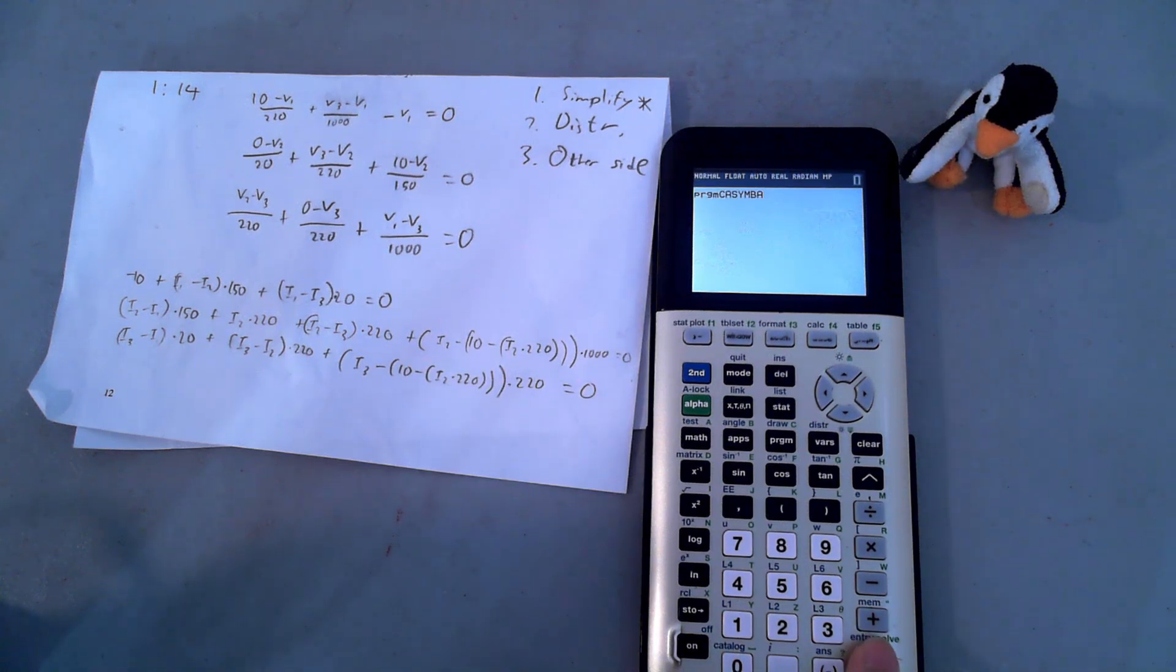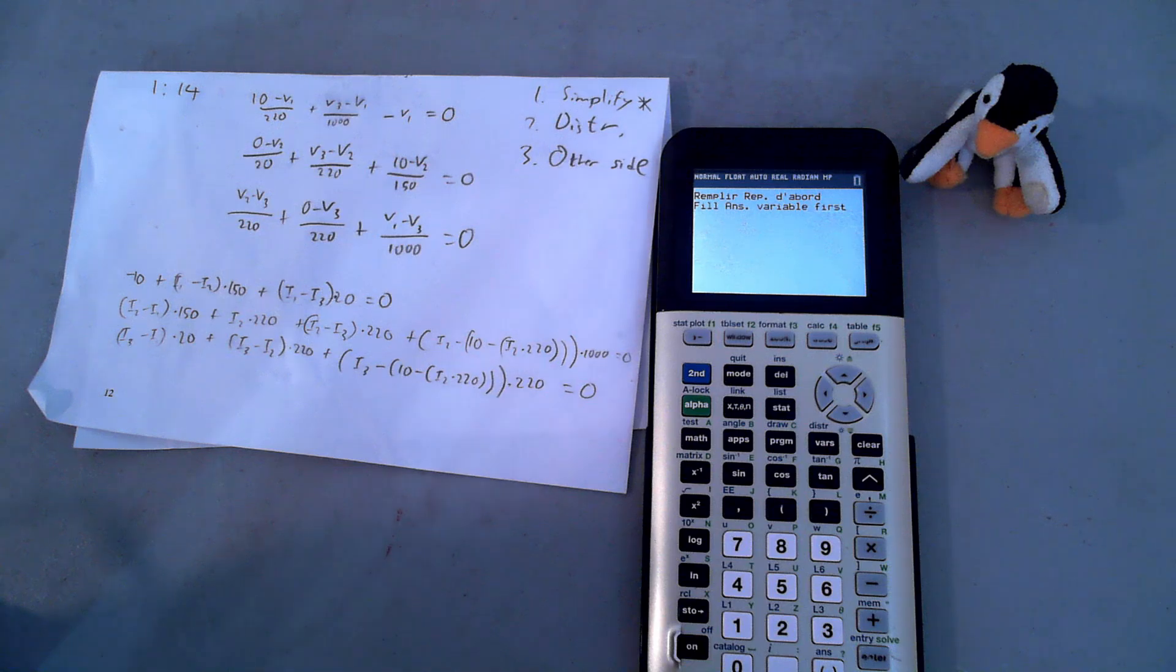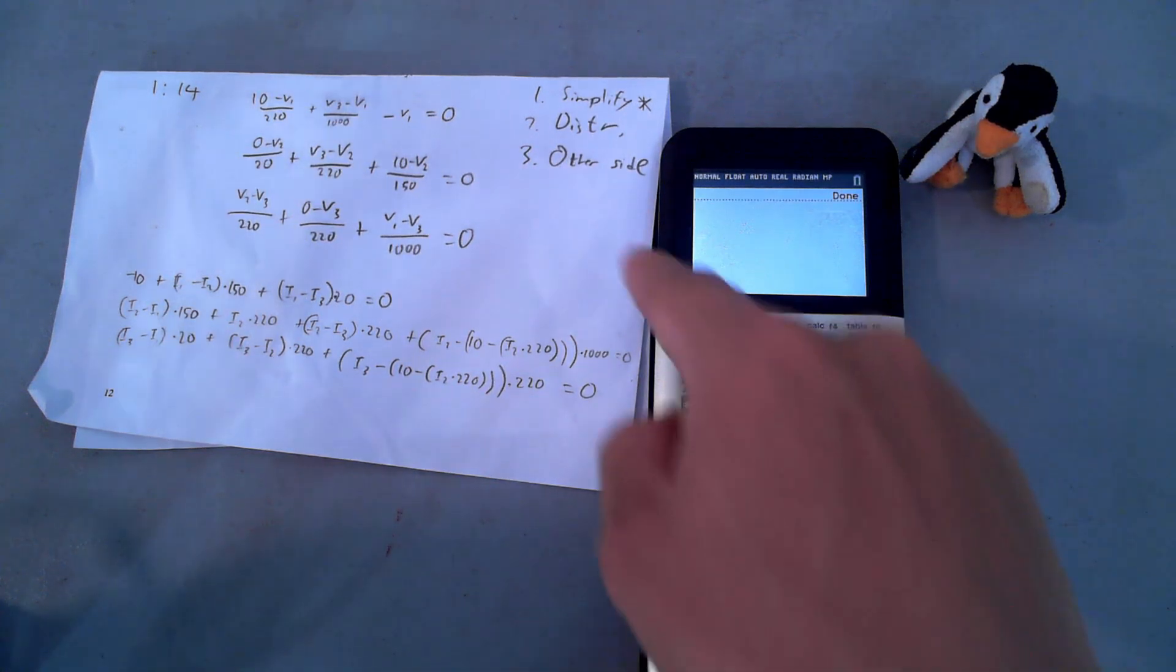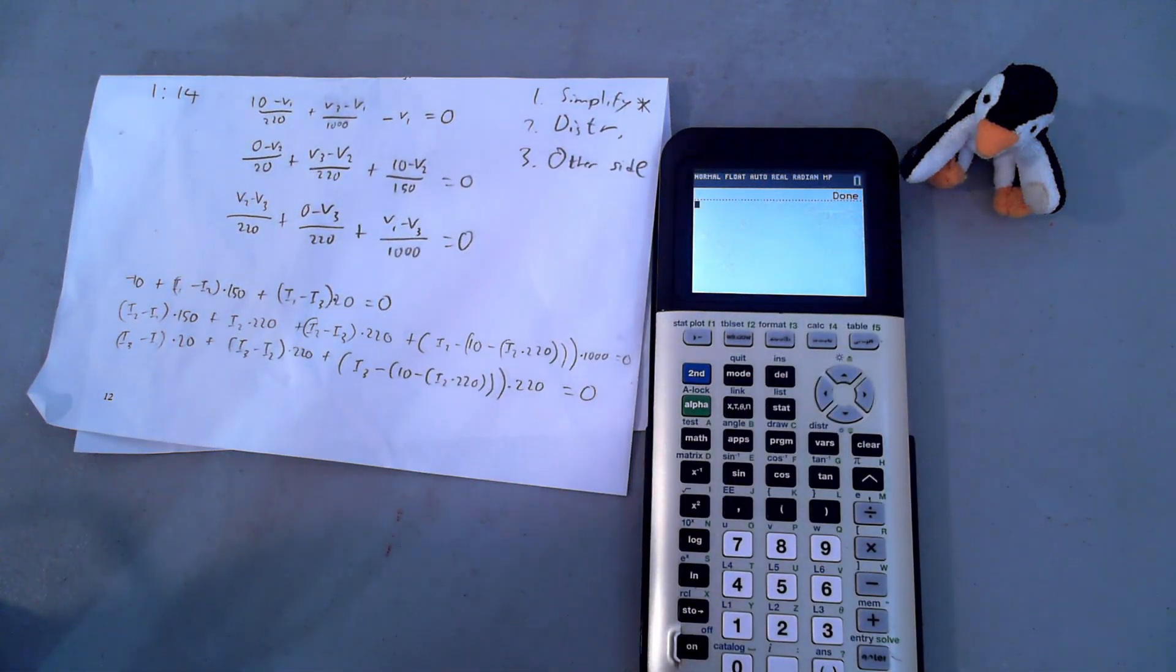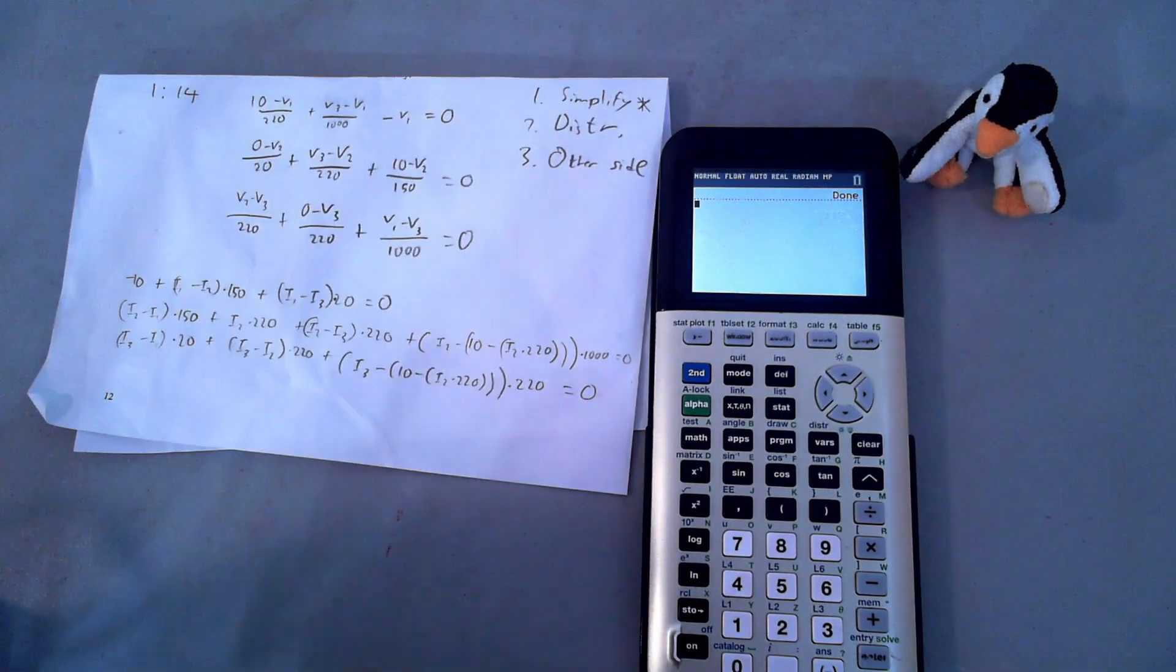I'm going to just give Casimba a dry run. And as you can see, Casimba complains saying that we need to fill the answer variable first. Now what that means is that we actually need to type in this equation into our calculator. Well, I guess it's an expression since we don't put the equal zero.